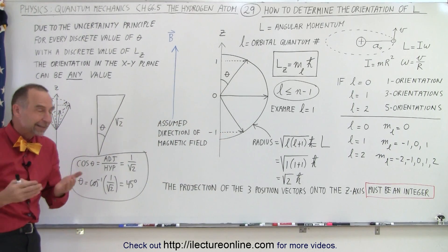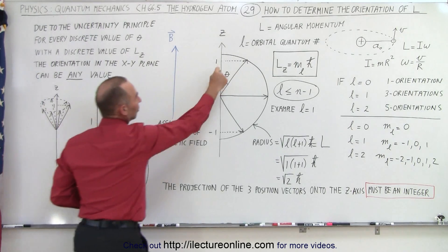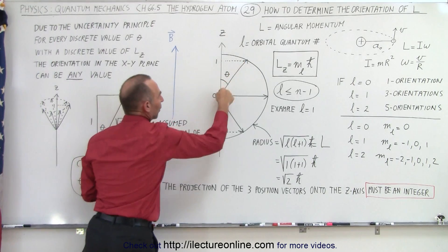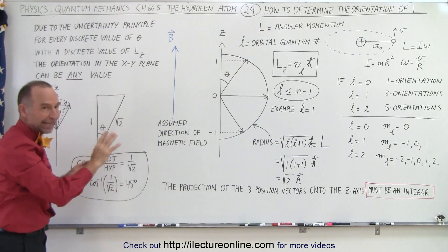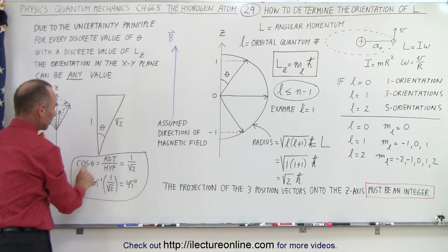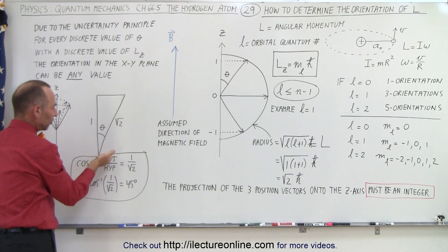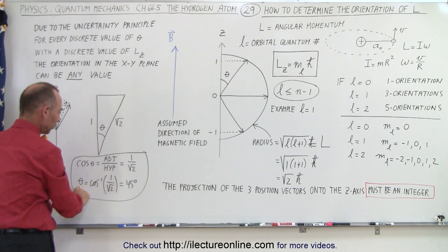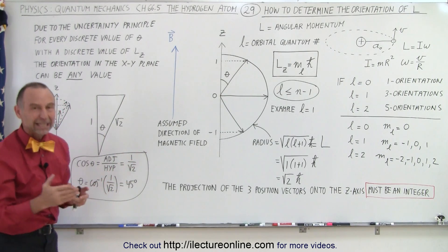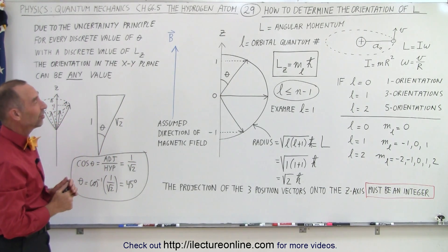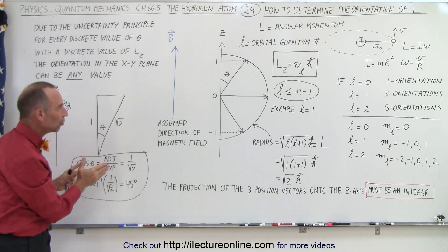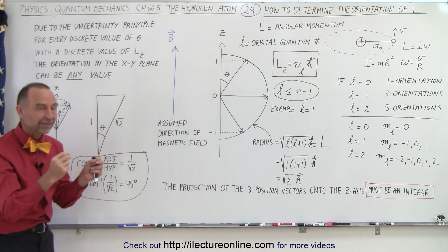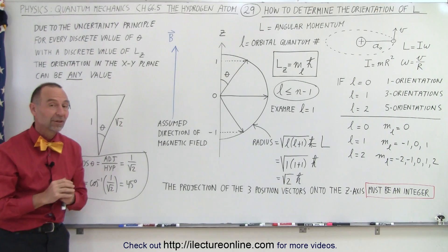To calculate the actual angle, we look at the right triangle formed. We know that one side is equal to 1, and the hypotenuse — the radius — is the square root of 2 (times H-bar, which I'll leave out here for simplicity). The cosine of the angle equals the adjacent side divided by the hypotenuse, which is 1 divided by the square root of 2. Therefore that angle is 45 degrees. That's how we find the possible orientations of the angular momentum inside the hydrogen atom based upon those quantum numbers.